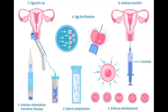Treatment for infertility in women can take many forms, depending on the underlying cause of the condition. For example, if hormonal imbalances are identified, treatment may include medications to regulate hormone levels. If structural abnormalities are identified, surgery may be required to correct them. In some cases, medication may be prescribed to regulate ovulation. In vitro fertilization, or IVF, is a popular treatment for infertility in women.